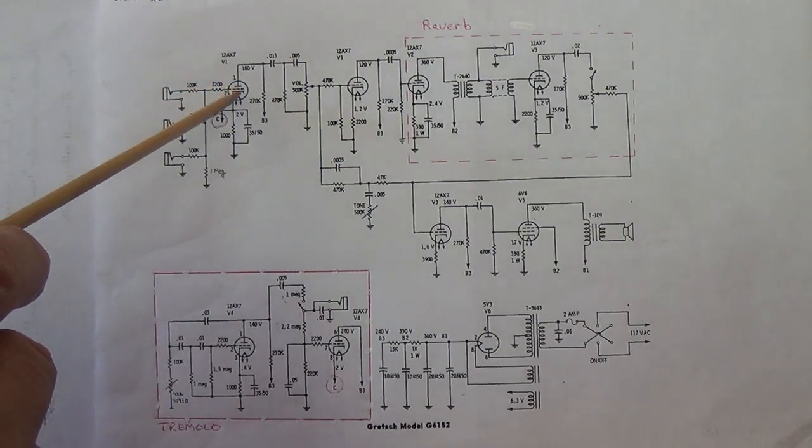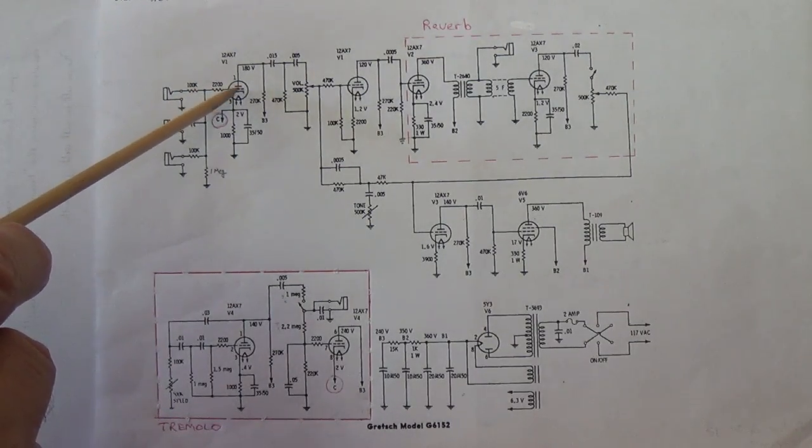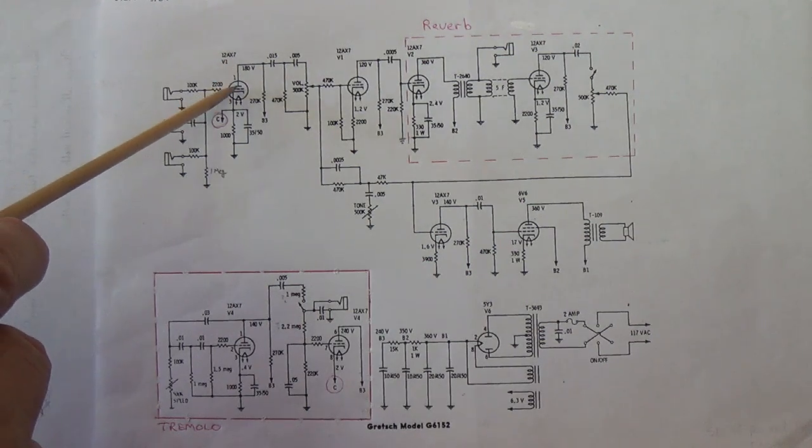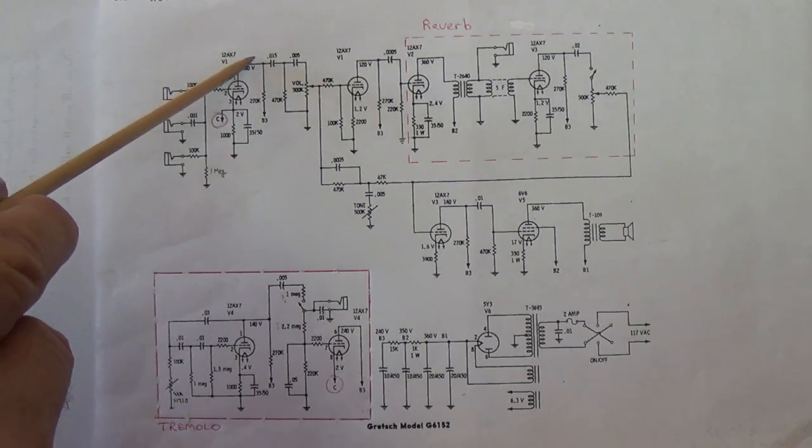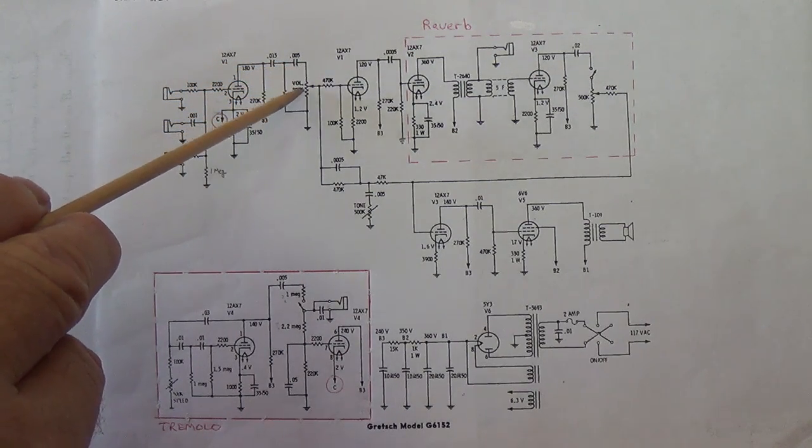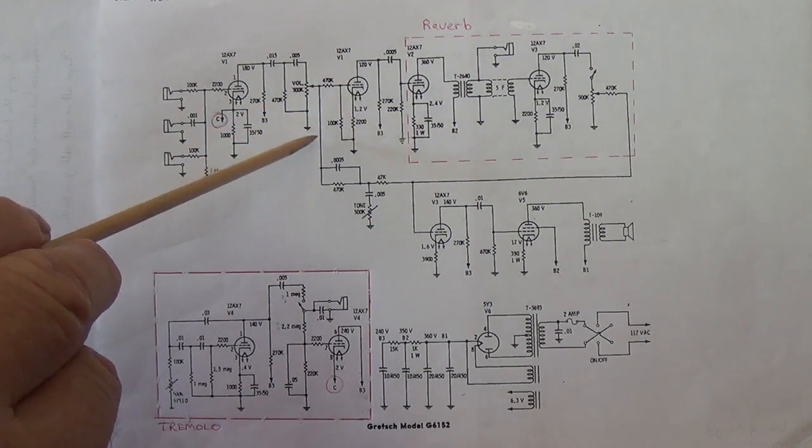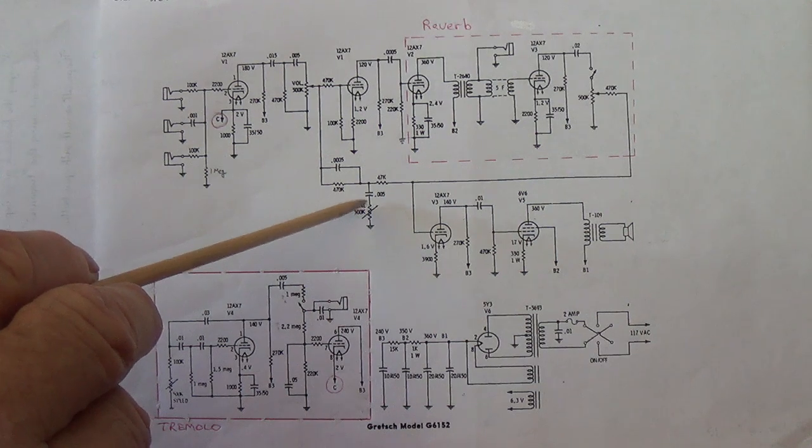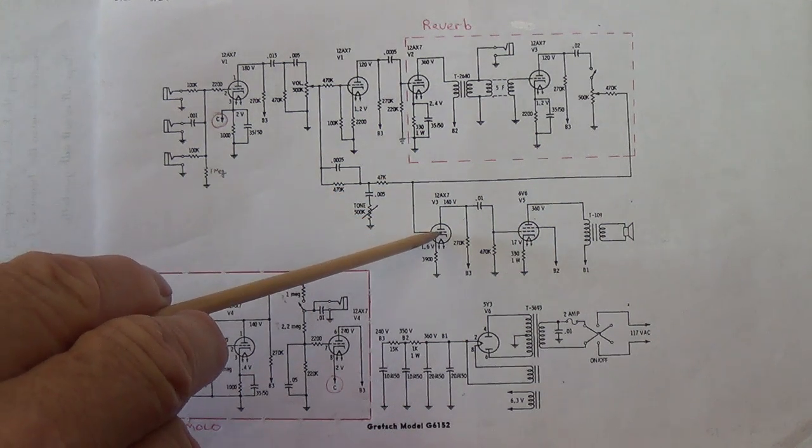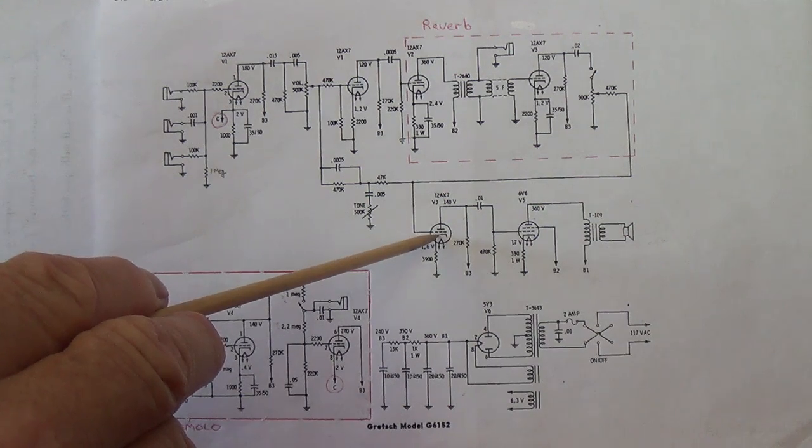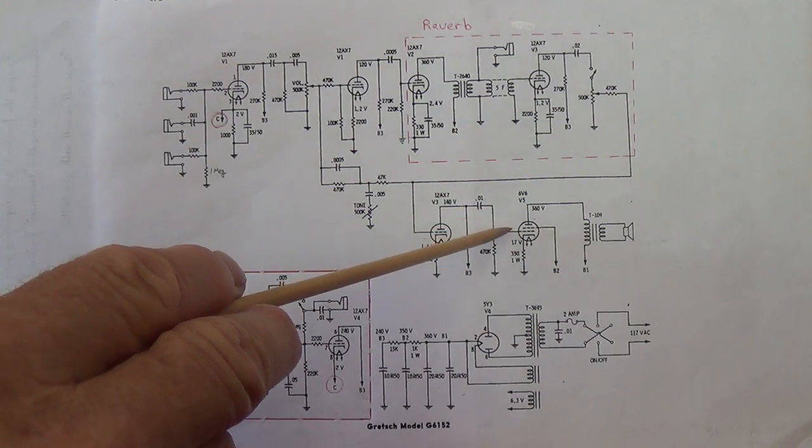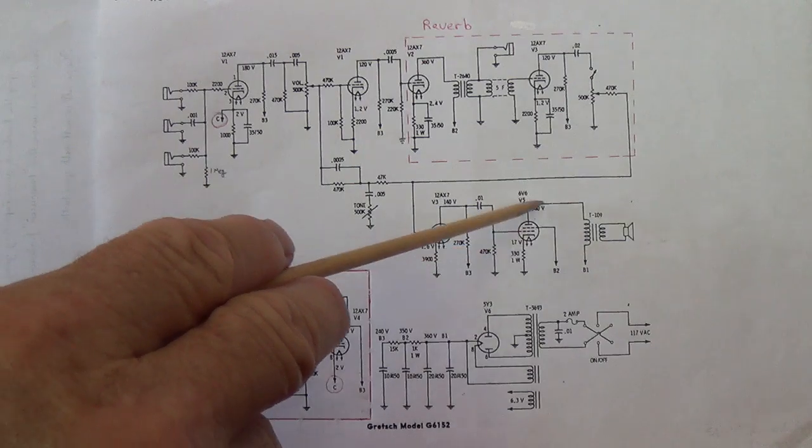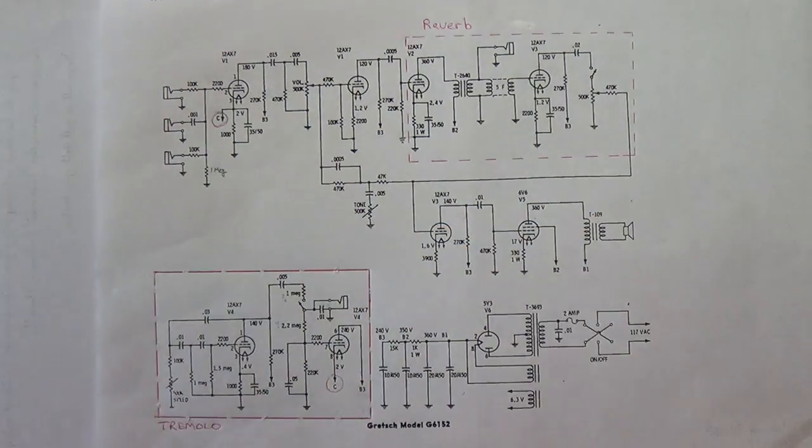That will be fed in here to the first triode of the first 12AX7 or V1. Now let's just take a quick look at the circuit if there is no tremolo or reverb in effect. We'll leave the plate of the first 12AX7, come over here to a volume control, drop down to a tone control into the second stage of the 12AX7. It's a different tube but it's the second triode and then on through a coupling capacitor into the 6V6 where it will drive the output transformer and the speaker.